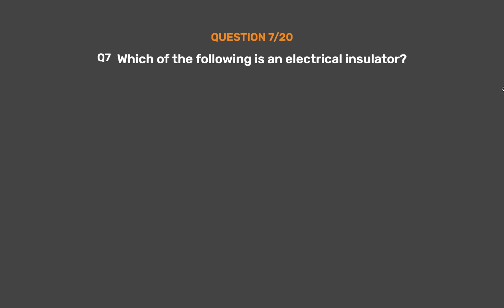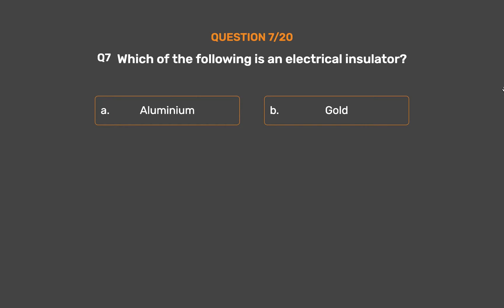Question number 7. Which of the following is an electrical insulator? Option A: Aluminium. Option B: Gold. Option C: Cork. Option D: Copper.